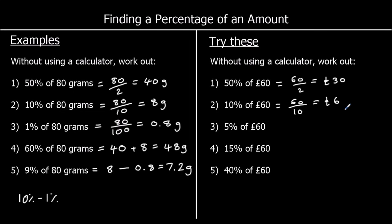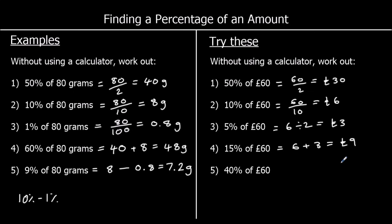Question 3, 5%: 5% is half of 10%, so half of 6 is 3. And question 4, 15%: that's 10% plus 5%. We can get 15% by adding 10% to 5%, so 6 plus 3 is 9. You could have also said 3 times 5%. And question 5, 40%: we can get that from 50% take away 10%, which is 30 take away 6, which is 24 pounds.